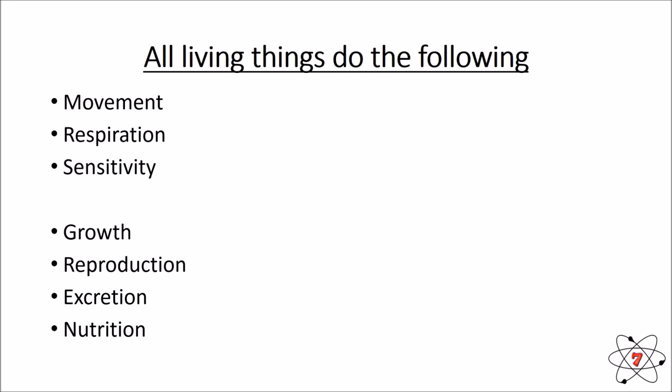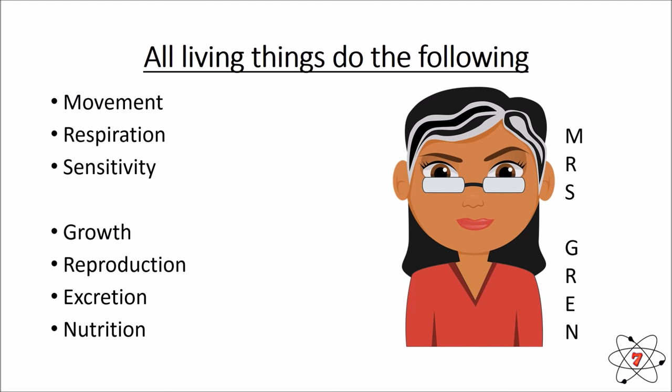This might be quite surprising — some things you might consider to be living aren't. There's a really easy way of remembering all seven life processes. We can use the mnemonic Mrs. Gren: Movement, Respiration, Sensitivity, Growth, Reproduction, Excretion and Nutrition.